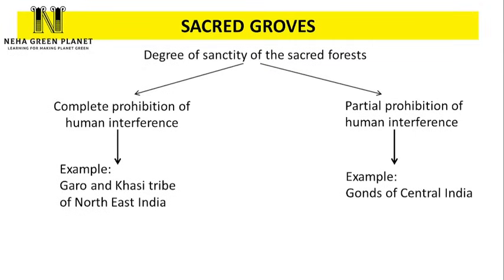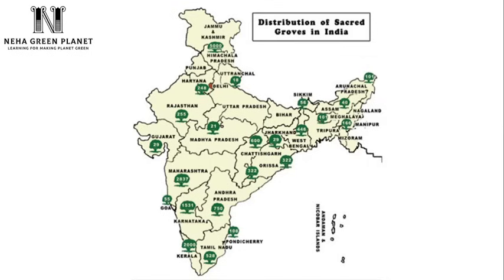Overall in India we have around 1 lakh to 1.5 lakh sacred groves. For example, Himachal Pradesh has 5,000 sacred groves, Maharashtra has around 2,837, and Karnataka has 1,531 sacred groves, and so on.